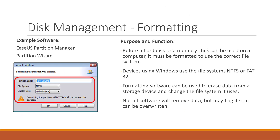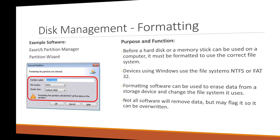Our next category of utility software is disk management. Our first example is formatting software. Before a hard disk or memory stick can be used on a computer, it must first be formatted to use the correct file system. Devices using Windows use the NTFS or FAT32 file systems, and any device formatted to one of these will be recognised and usable by Windows. Formatting software can also be used to erase data from storage devices, though erasing data doesn't necessarily remove it — it just tells the operating system that the data can be overwritten.